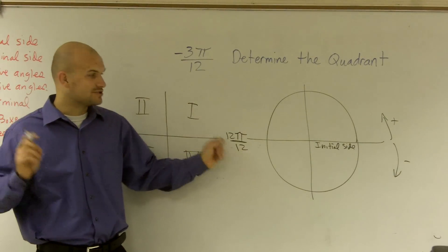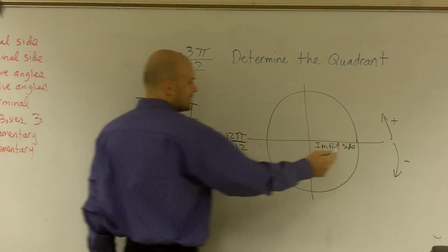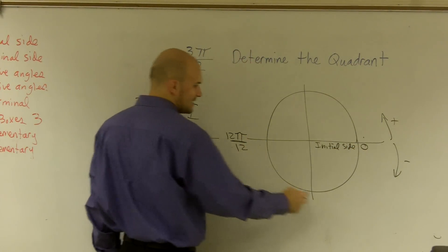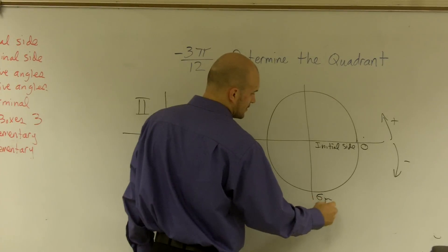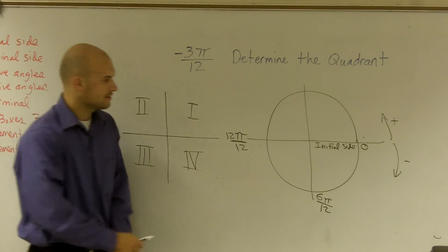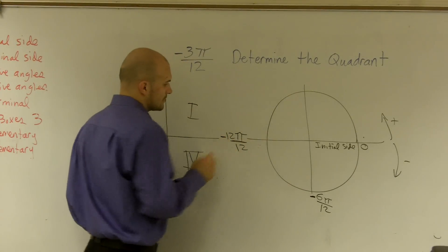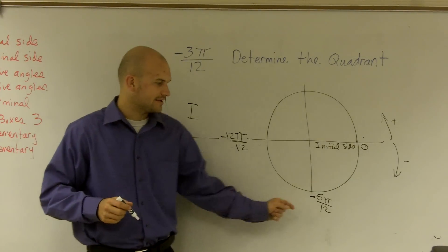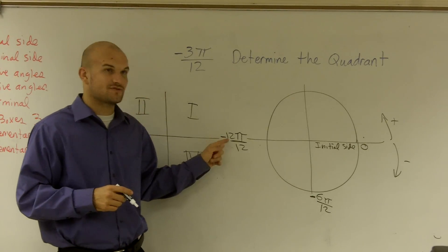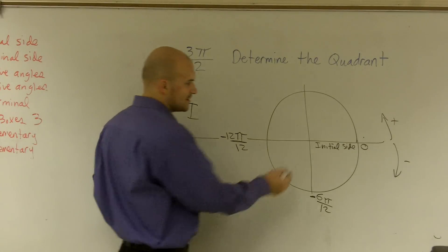The reason I'm doing this is just so we can visually see where this angle would be. So if this is 0, I'm going 0 to 12pi. Halfway there would be 6pi over 12. And this is going in the negative direction — because remember, we're going negative. So therefore, if this is negative 6pi over 12, and this is negative 12pi over 12, where would negative 3pi be? It's going to be halfway in there.